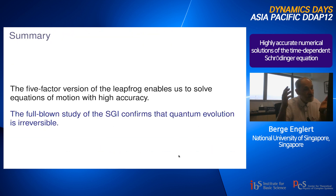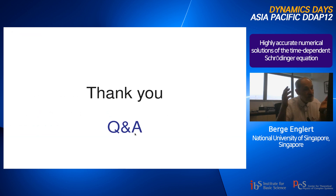To summarize: there is a five-factor fourth-order leapfrog approximation that enables solving equations of motion with high accuracy. I showed an example for one particle in 3D, but it is not limited to that. Our application to a full three-dimensional study of the Stern-Gerlach interferometer confirms that quantum evolution is irreversible.